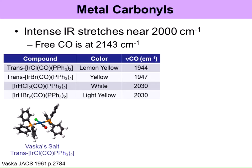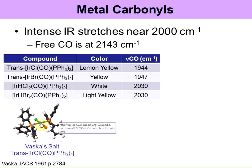For example, I want to look at Vaska's salt, which is a very classic inorganic compound. It's an iridium complex with trans carbonyls and chloride, or a trans CO and a bromide, and also triphenylphosphine ligands. Here's a picture of Vaska's salt — you've got the triphenylphosphines, the iridium center, the halide, and a CO on the other side.